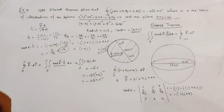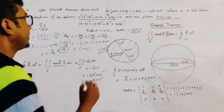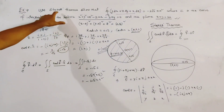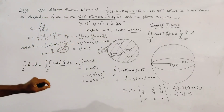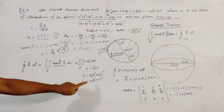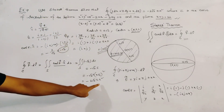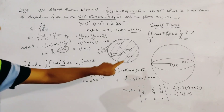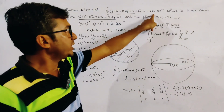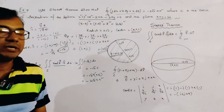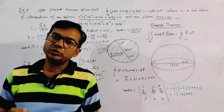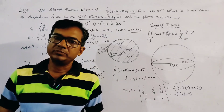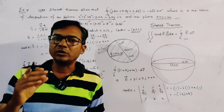So the value of the given integration, by using Stokes theorem, is minus 2 root 2 pi squared, which matches our given result. This is a very important example of Stokes theorem. Thank you for watching.